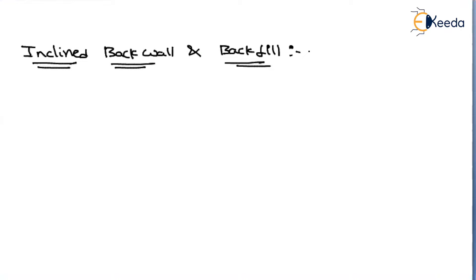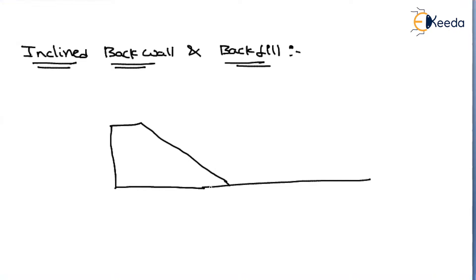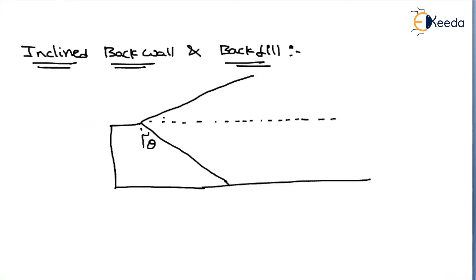Let us consider an inclined back wall and let us assume that the slope of the back wall is theta. This is nothing but a horizontal line. For the backfill, let us assume that this is the inclined backfill and let us assume that the angle will be equal to beta.